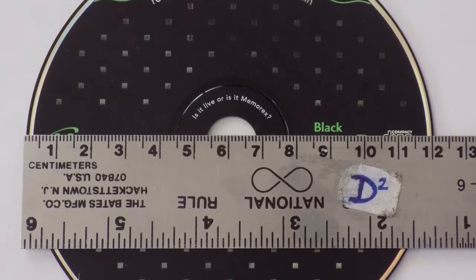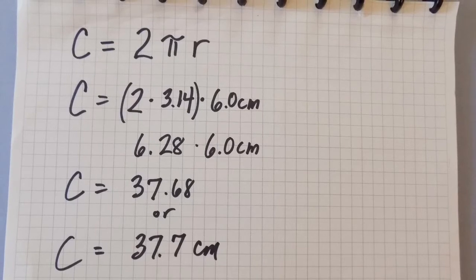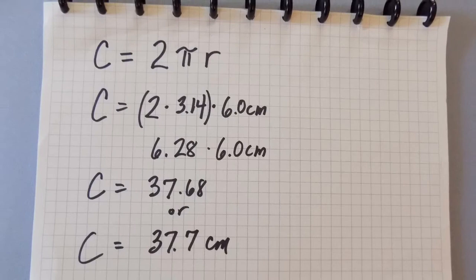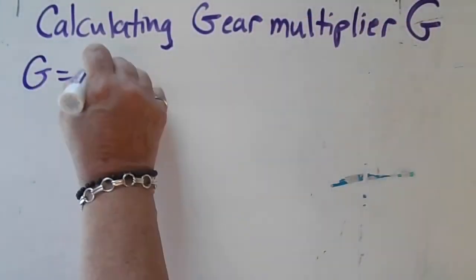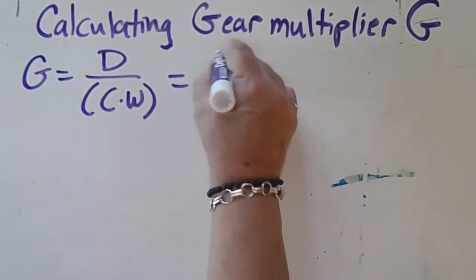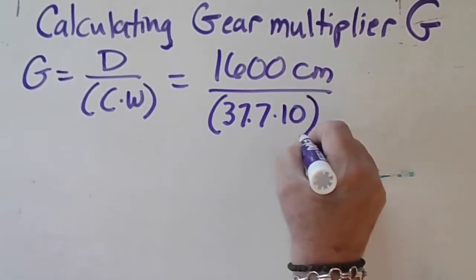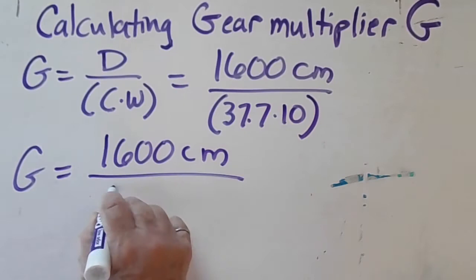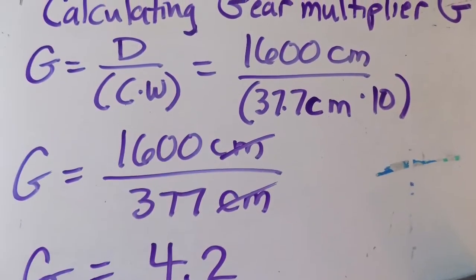Suppose you want to use a standard CD as the drive wheel. The CD has a diameter of 12 centimeters, a radius of 6 centimeters, and a circumference of approximately 37.7 centimeters. To solve for G, the gear multiplier: G = 1600 cm ÷ (37.7 cm × 10 wraps) = 1600 ÷ 377 cm, which yields a gear ratio or gear multiplier of approximately 4.2.